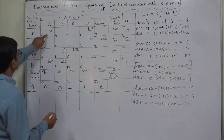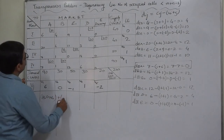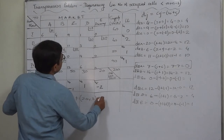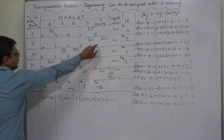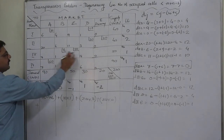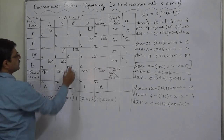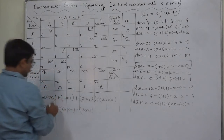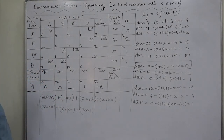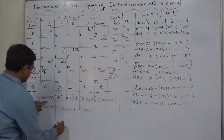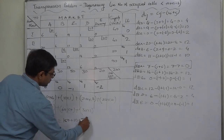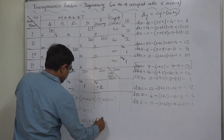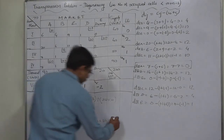Let's calculate the total cost: 30 units × Rs. 6, plus 10 units × Rs. 1, plus 20 units × Rs. 3, plus 20 units × Rs. 0 (dummy column, not considered), plus 50 units × Rs. 0, plus 60 units × Rs. 7, plus 30 units × Rs. 1. That is Rs. 180 + Rs. 10 + Rs. 60 + Rs. 420 + Rs. 30 = Total Rs. 700.